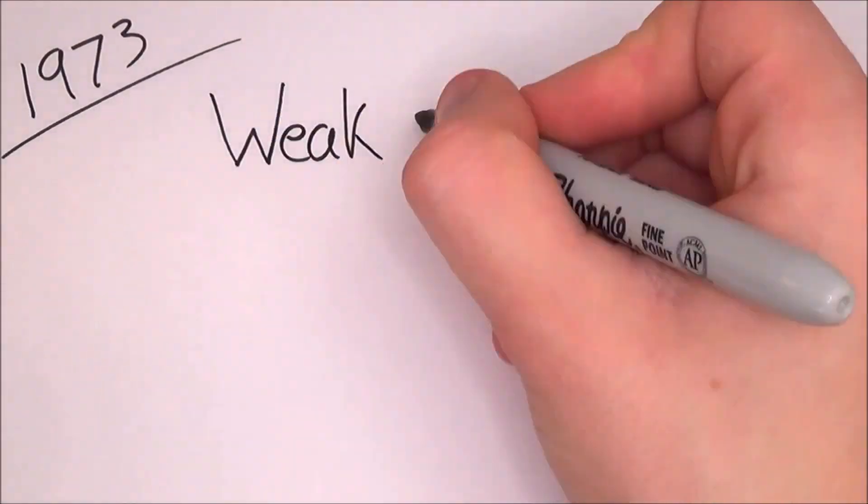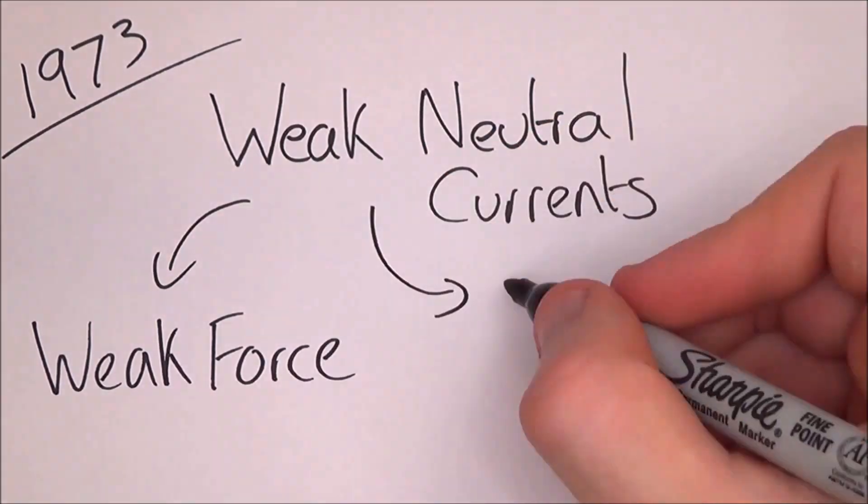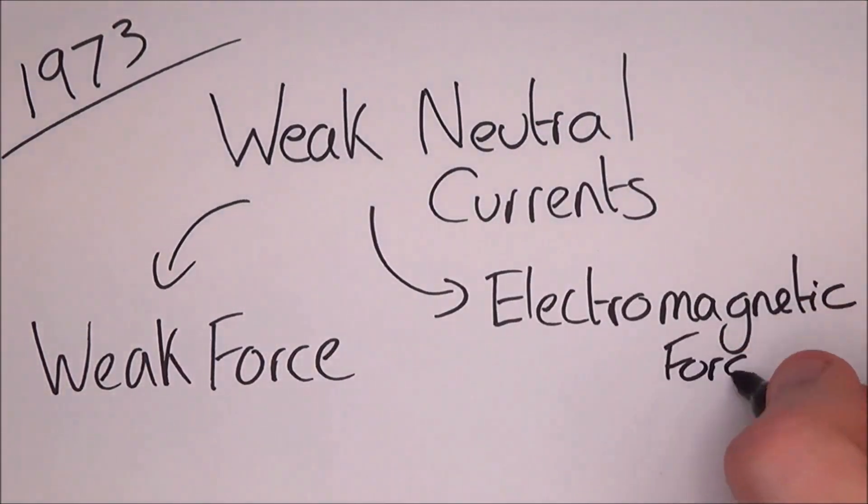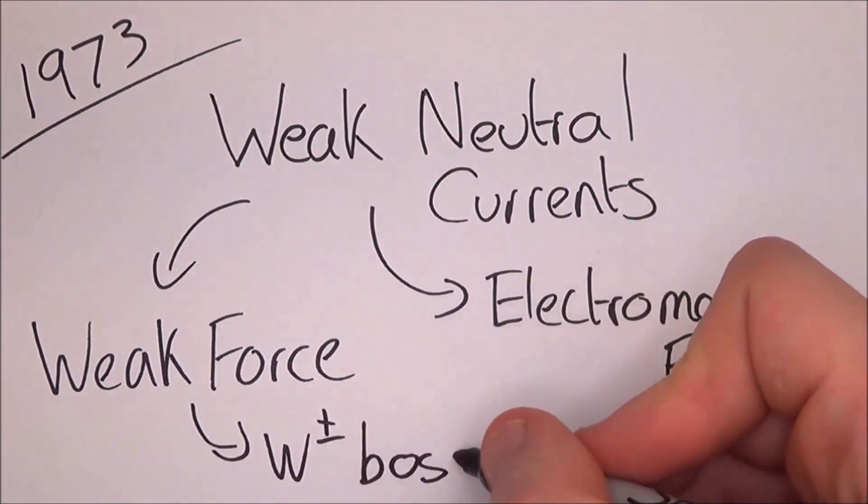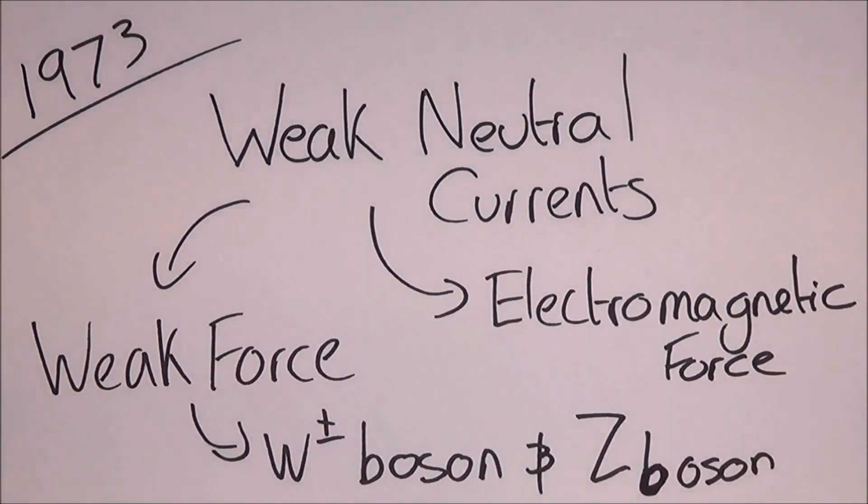Some important discoveries have been done with the bubble chamber. In 1973, weak neutral currents were discovered. This is to do with the weak force and electromagnetic force. Electroweak theory, which is the same thing, leads the way to the discovery of W and Z bosons in 1983.